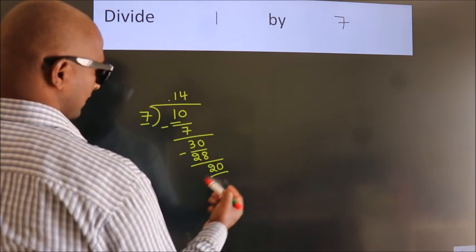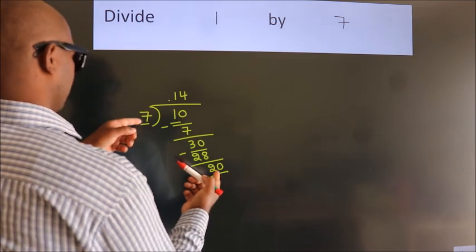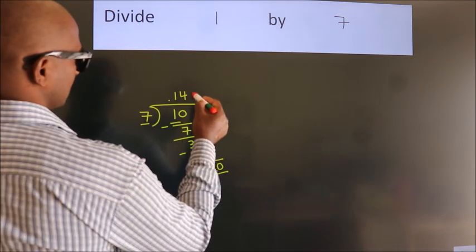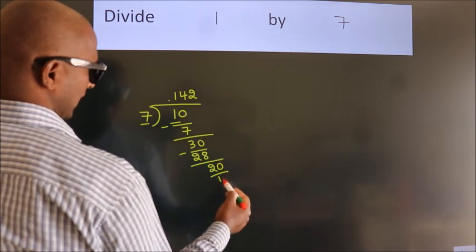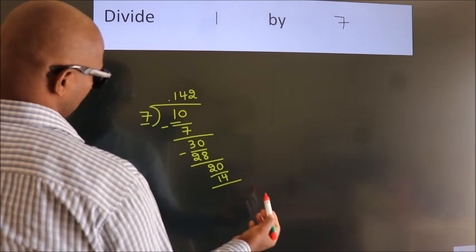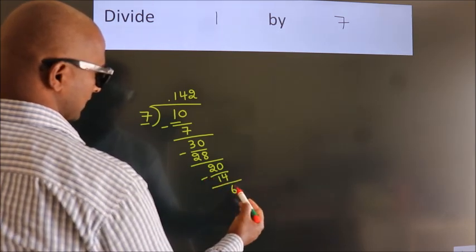So, 20. A number close to 20 in 7 table is 7, 2s, 14. Now, we subtract. We get 6.